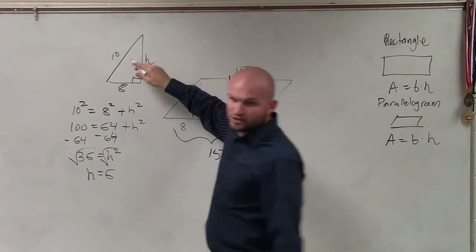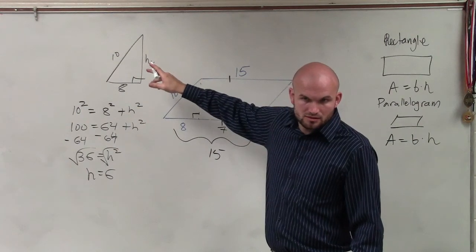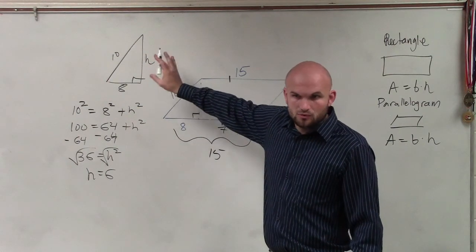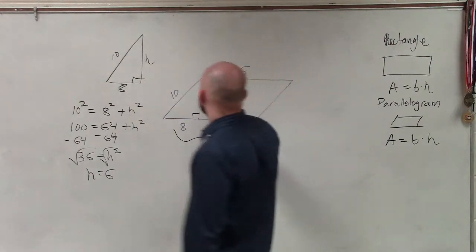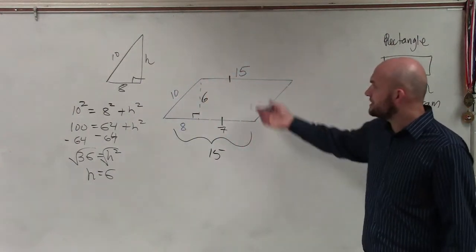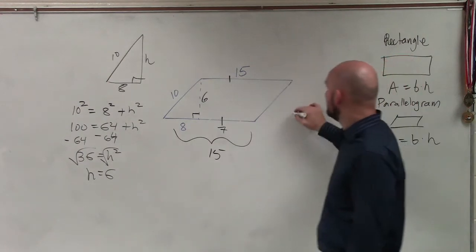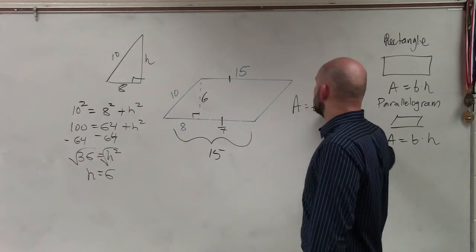So now we figure out the height, which is 6. You see how I got 6? So now we figure out the height. And now I notice that this is 15, so the area equals my base times height.